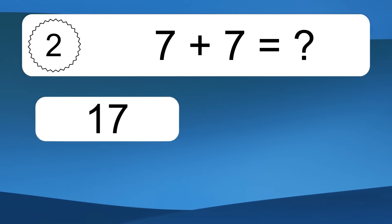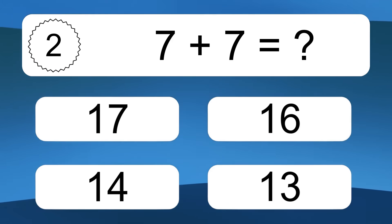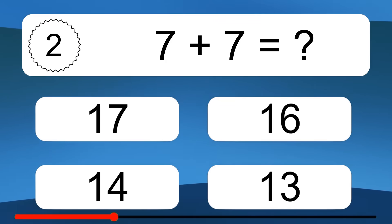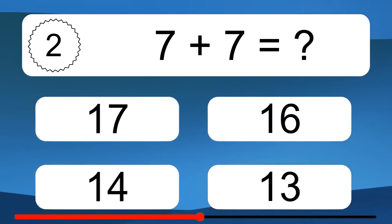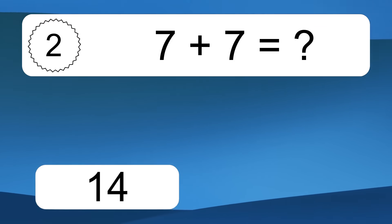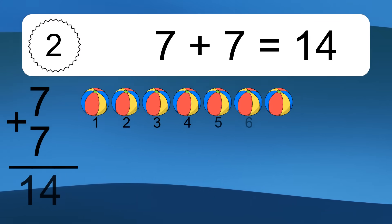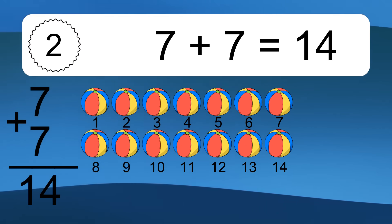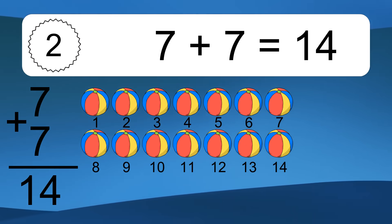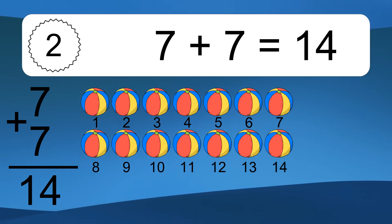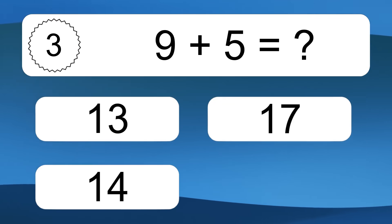7 plus 7 equals what? 7 plus 7 equals 14. Let's count it: 1, 2, 3, 4, 5, 6, 7, 8, 9, 10, 11, 12, 13, 14.